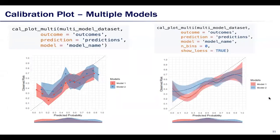Same as the ROC curve and the threshold performance plot, the calibration plot also allows comparison of different models by calling the calplot multi-function. The left figure shows a non-smoothed comparison, and the right figure shows the comparison of smoother lines.